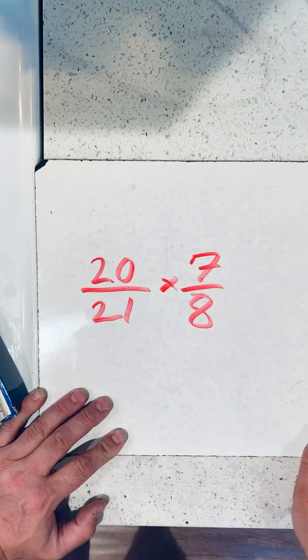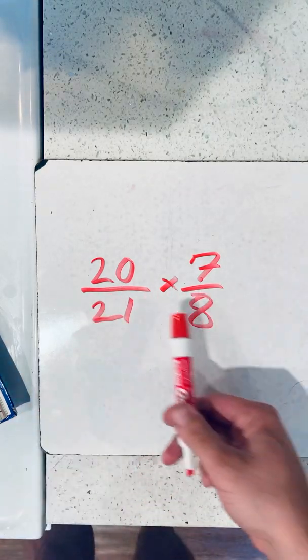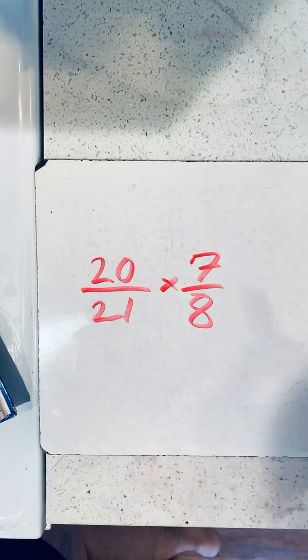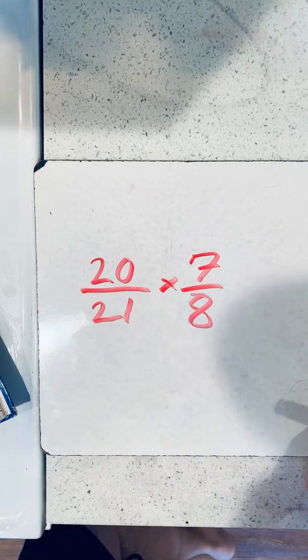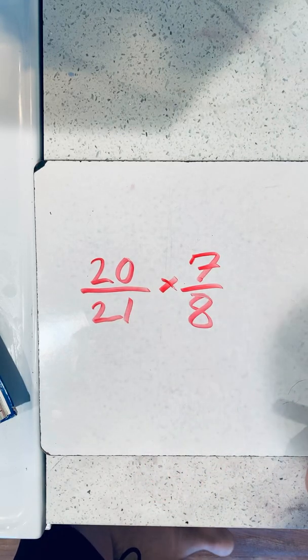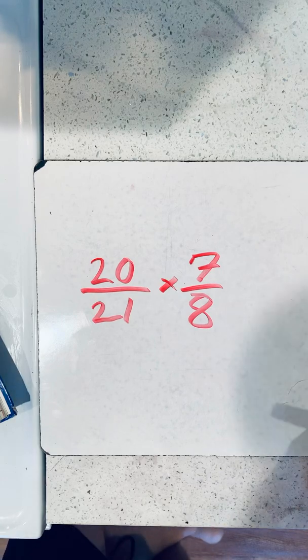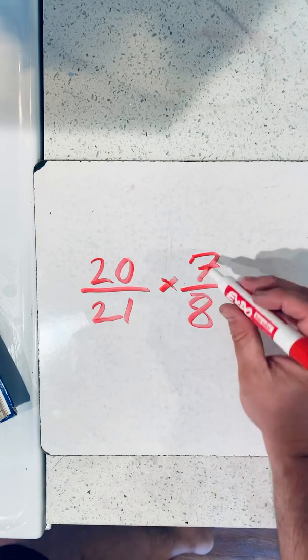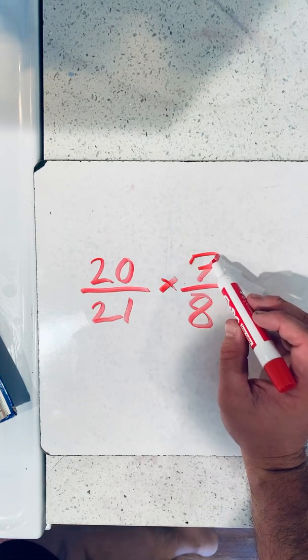So first things first, I could just multiply it all out, 20 times 7, 21 times 8. But they say we could do something easier. So what they're saying is to find the greatest common factor. So right here we go, follow along with me on page 204.